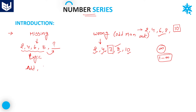The basics are: addition, subtraction, multiplication, and division — we all know those. Along with that, prime numbers are very important, as well as squares and cubes. These are very important in number series because most of the problems are related to squares, cubes, and prime numbers. These have highest priority while solving problems. Additions and subtractions have the least priority. I will tell you what prime numbers, squares, and cubes you need to learn.